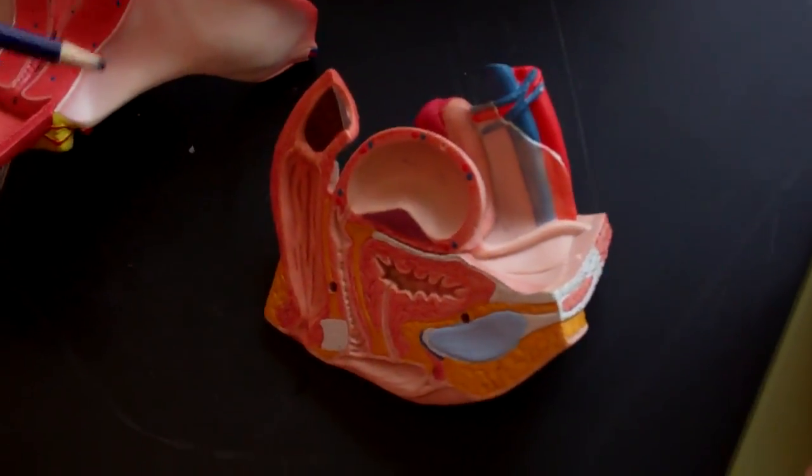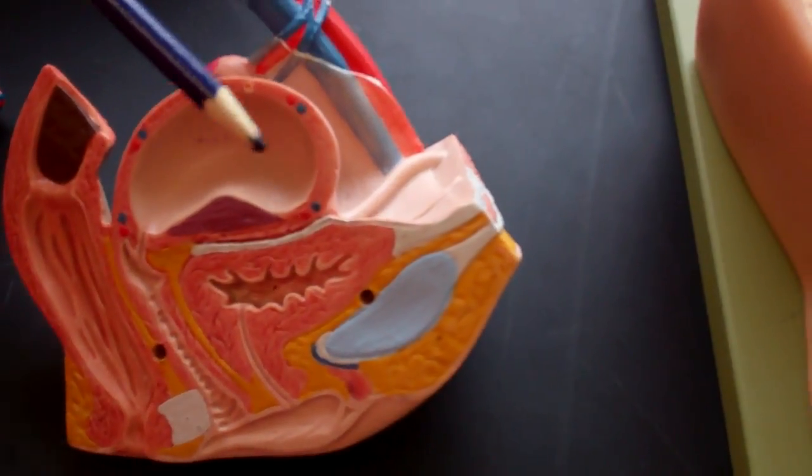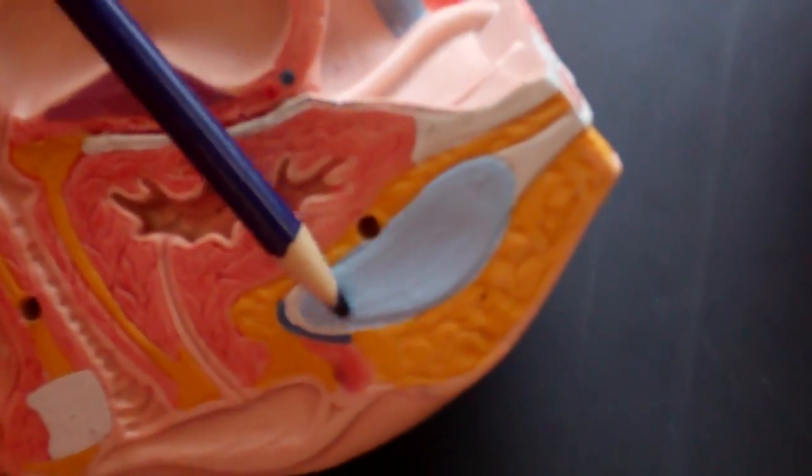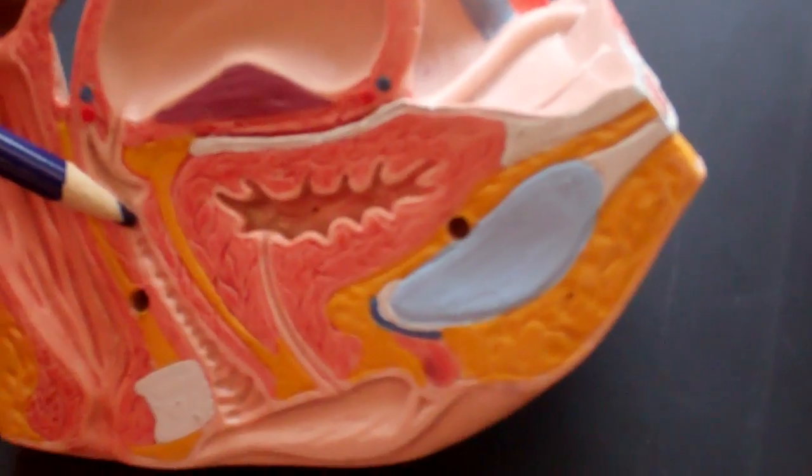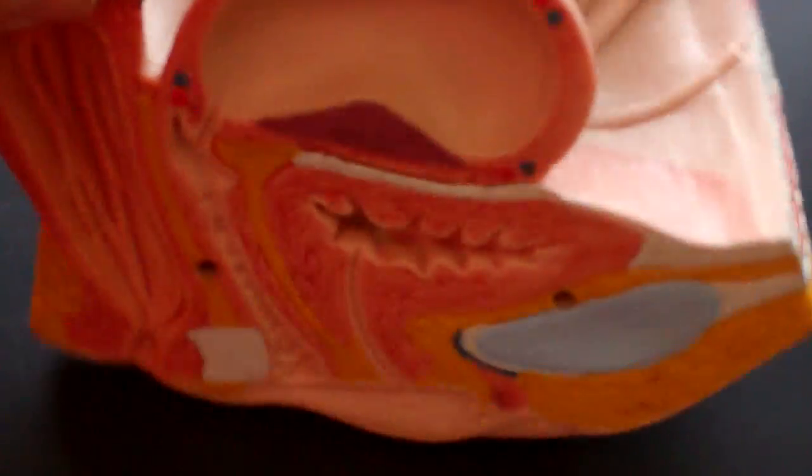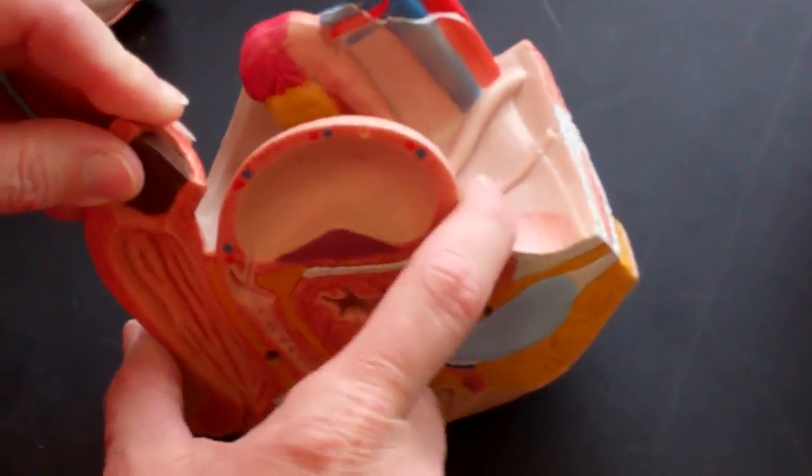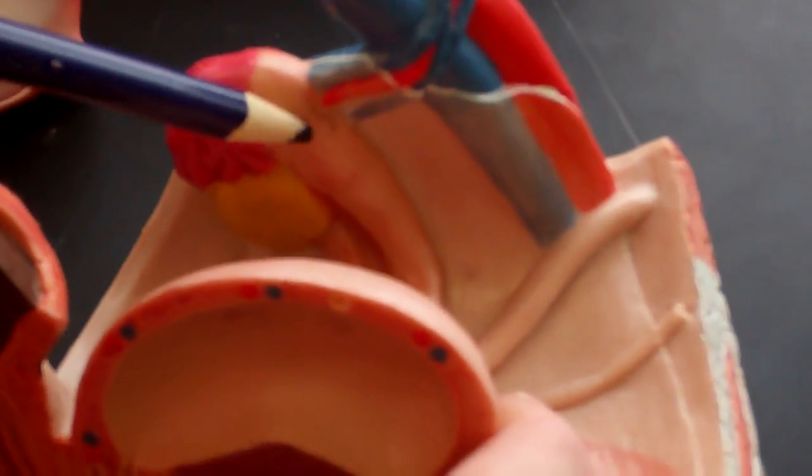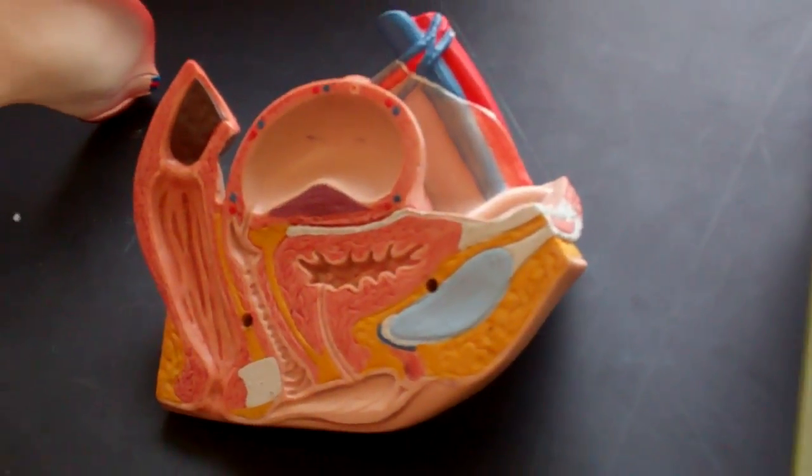This guy's okay, it's not the best model. The things that I might label, pubic symphysis again, the vagina. Let me hold it up a little bit. The ovary, the fimbriae, uterine tube perhaps on that model. That's about it. That model's not terribly exciting.